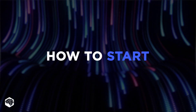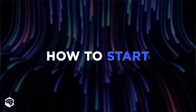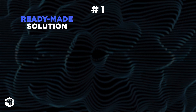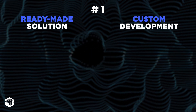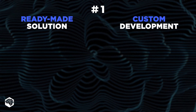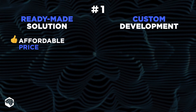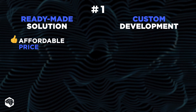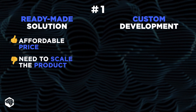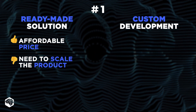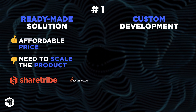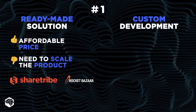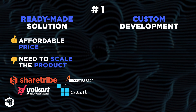So, you're probably thinking, where do I start? The first step is to decide between a ready-made solution and custom development. A ready-made solution can get you started quickly and at an affordable price, but keep in mind you will eventually need to scale the product. Some popular ready-made platforms include ShareTribe, Rocket Bazaar, YoCart, and CSCart.